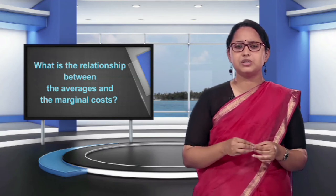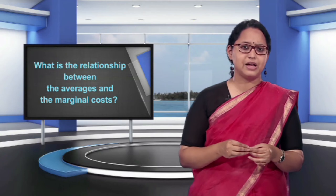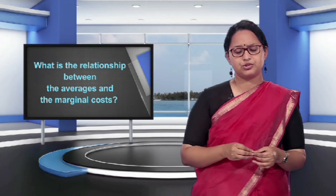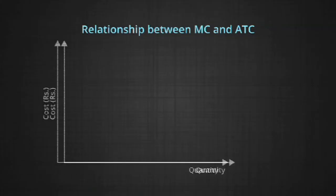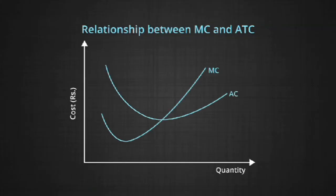This implies: for an additional subject, if the marginal score is more than the average score, it pulls up the average; and if the marginal score is less than the average score, it pulls down the average. Now, the relationship between MC and ATC curves: when average total cost is falling, marginal cost is less than average total cost. Marginal cost always cuts the average cost curve at its minimum — the point where MC equals ATC is the minimum point of ATC. When average total cost is rising, marginal cost is always greater than average total cost.